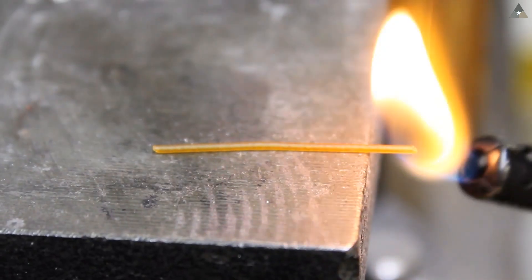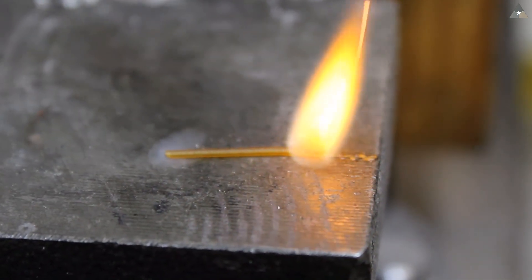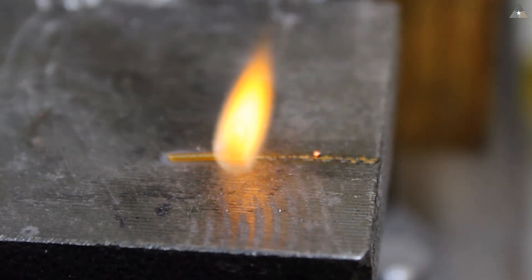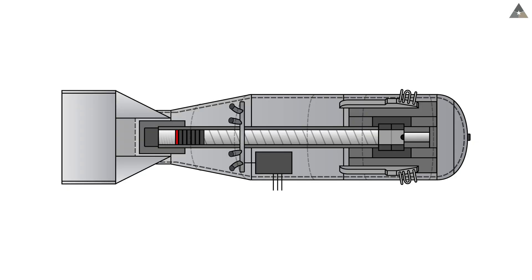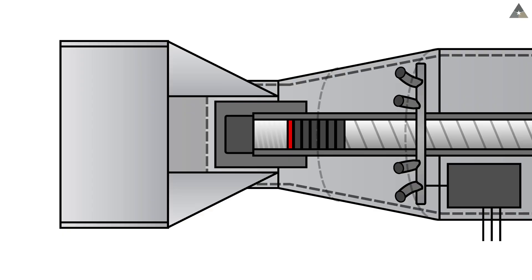Cordite is a smokeless powder made from nitroglycerin, nitrocellulose, and petroleum jelly and was very popular in artillery at the time. Just in front of the powder would be a projectile tungsten carbide disc. This disc would act like a wad in a shotgun shell and would help propel the projectile down the barrel.